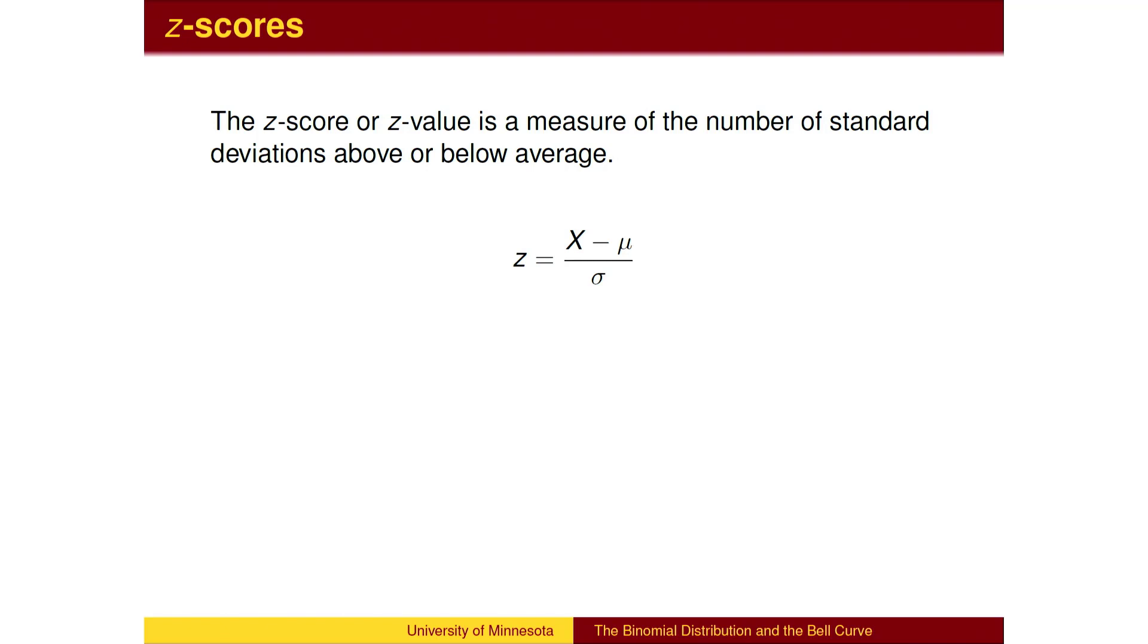To compute the z-score, subtract the mean from the measured value x. This will give you the amount that x is above the mean. Divide that amount by the standard deviation, and z is the number of standard deviations above the mean.